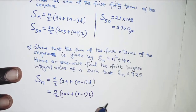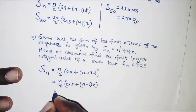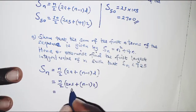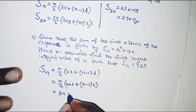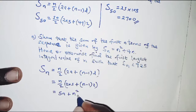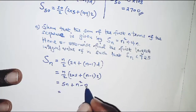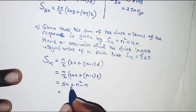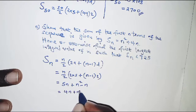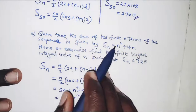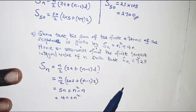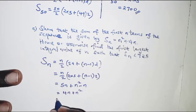Expanding the brackets, we get 5n plus n squared minus n, which simplifies to n squared plus 4n. Rearranging, this is n squared plus 4n, which is exactly what we were required to show.